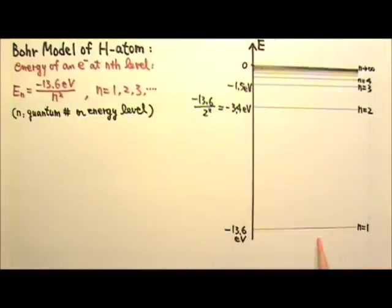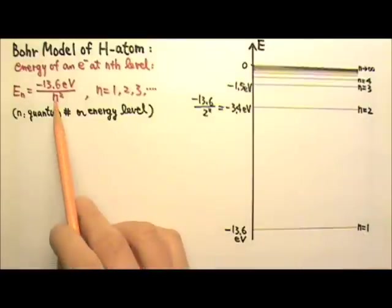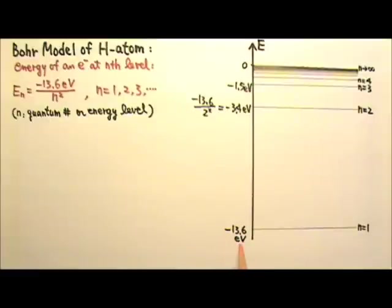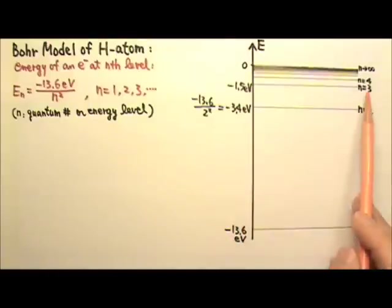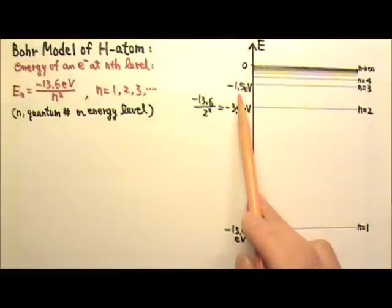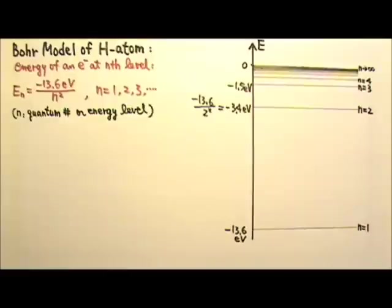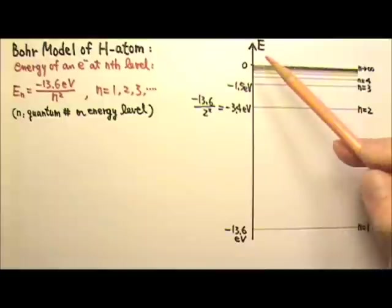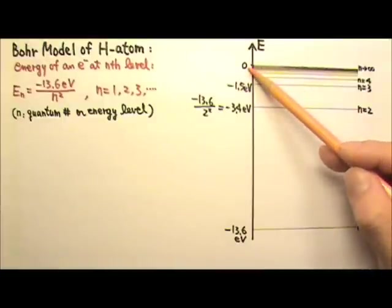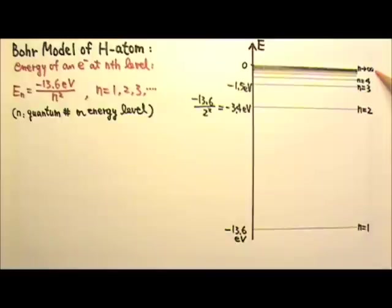This is an energy level diagram for the Bohr model of hydrogen. If I plug in N equals 1, I get negative 13.6 eV. If I plug in N equals 2, I get negative 3.4 eV. N equals 3, negative 1.5 eV, and so on and so forth. When I plug in N approaches infinity, I get E equals 0. That means the electron is no longer bound by the atom.